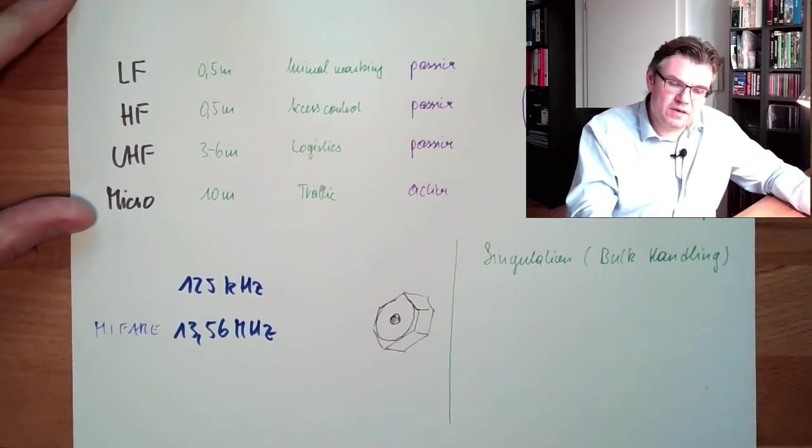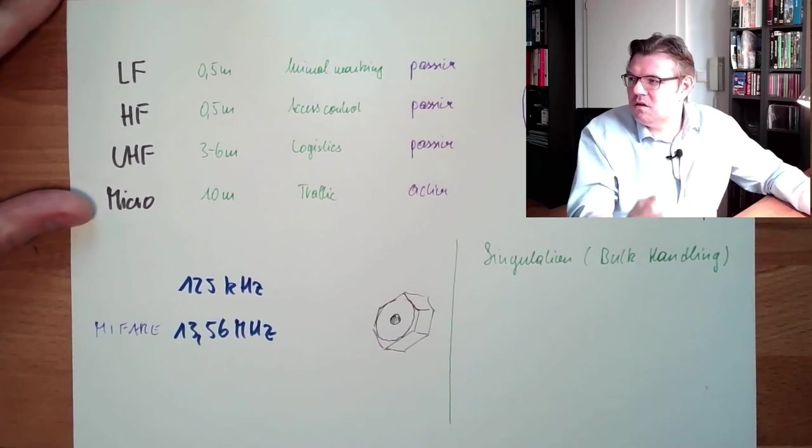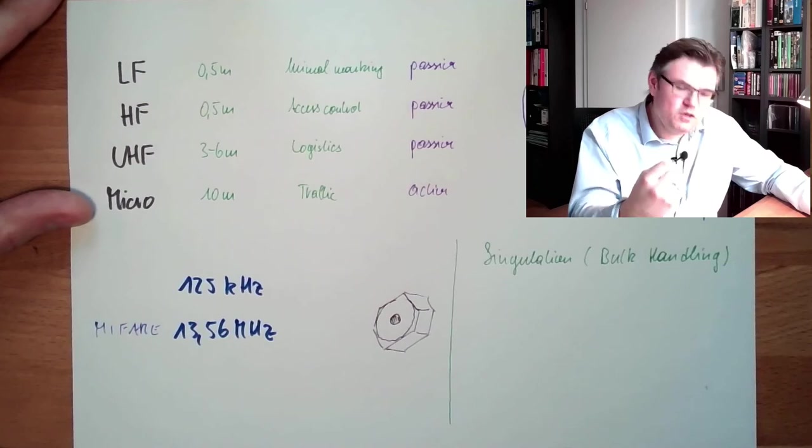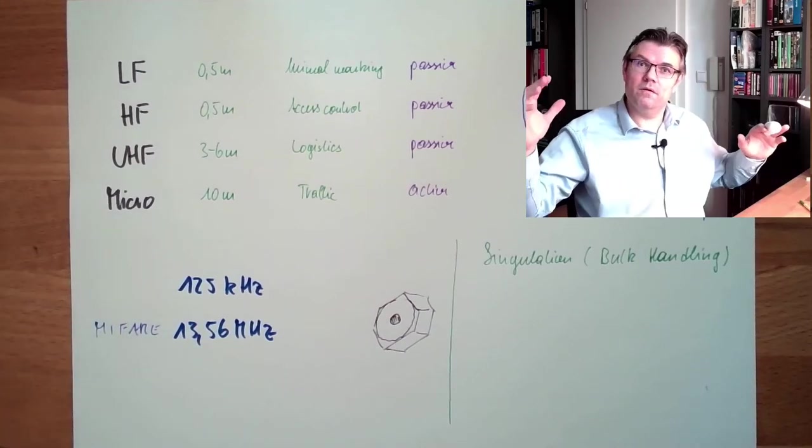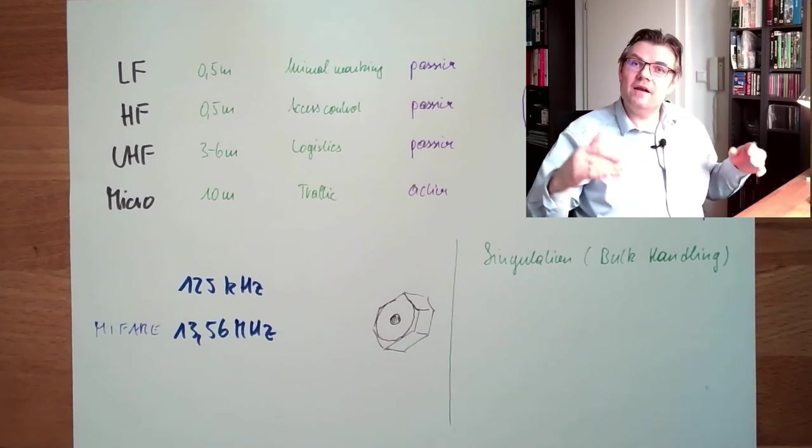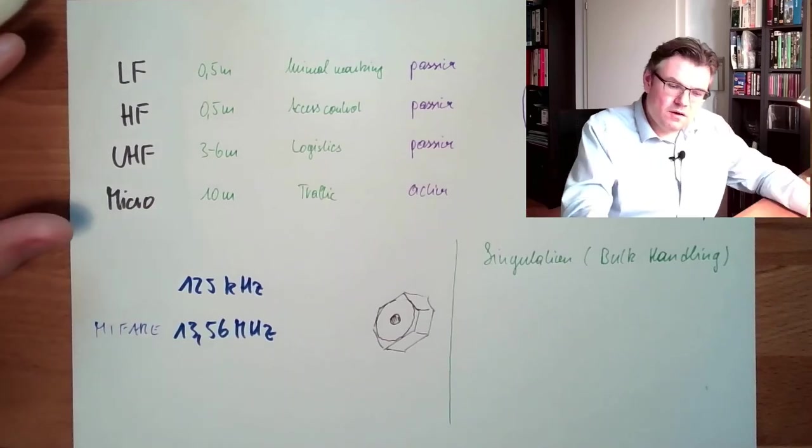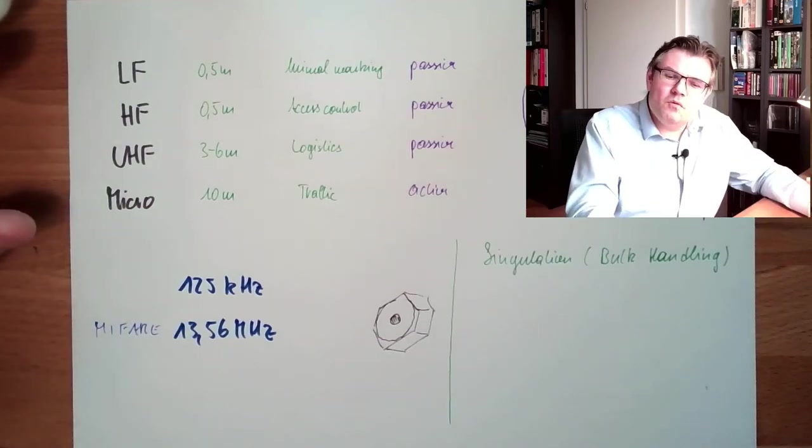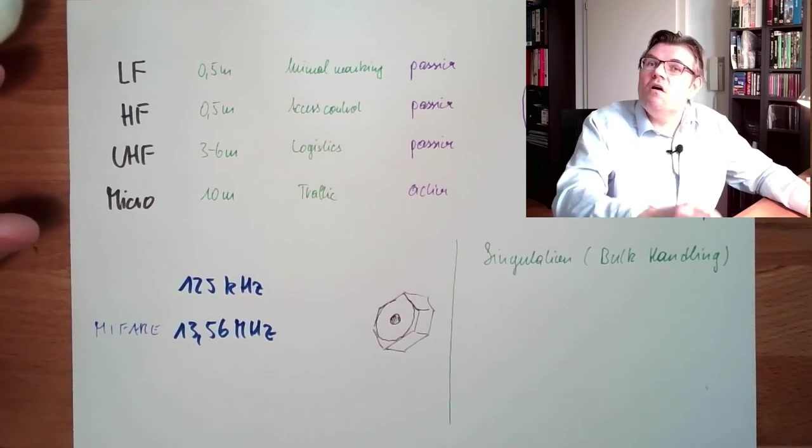The transponders need to have some special features inside. Not just, hey, I'm here, I'm here, I'm here. Okay, I've noticed. And not all at the same time, of course. It's clear. There needs to be some logic inside which prevents this overlapping communication of the bulk.